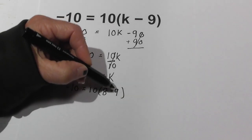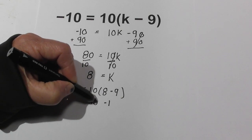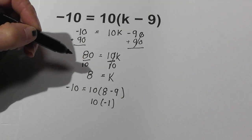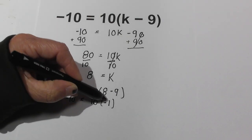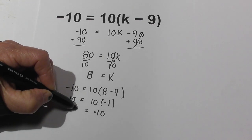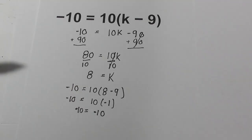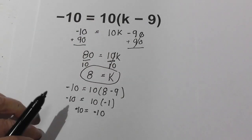Negative 9 and a positive 8 is negative 1 times 10. So 10 times negative 1 is indeed negative 10, which equals negative 10. So there we go, the answer is k = 8.